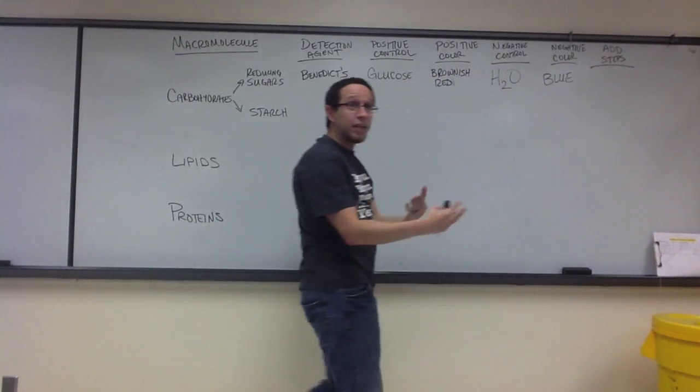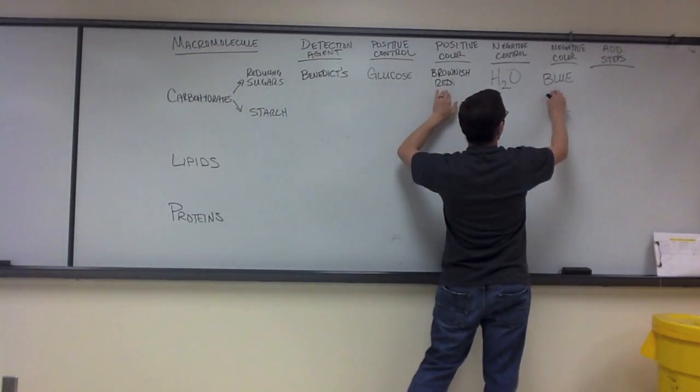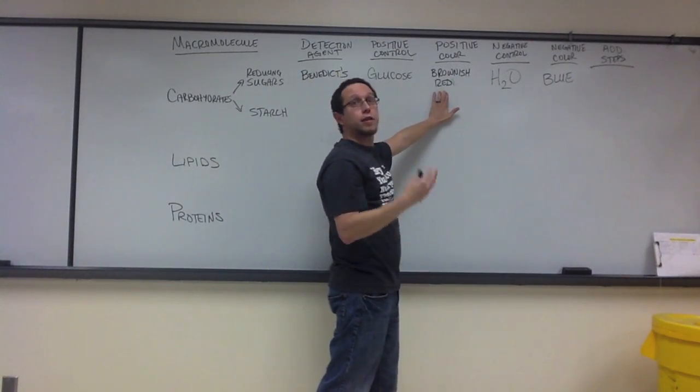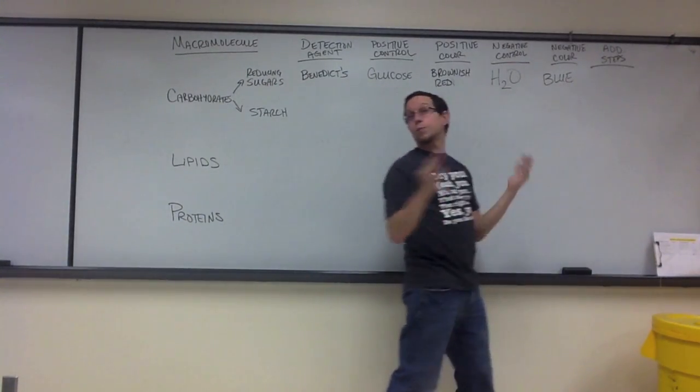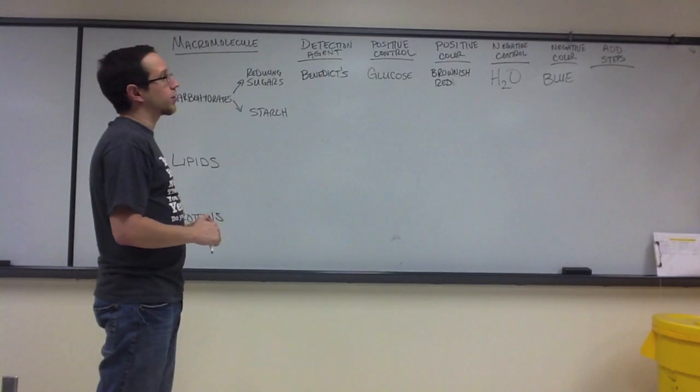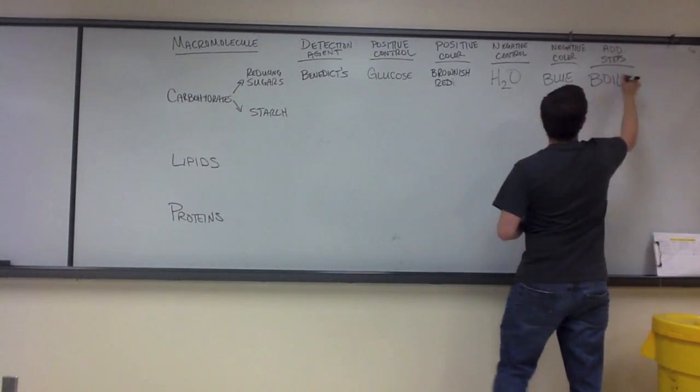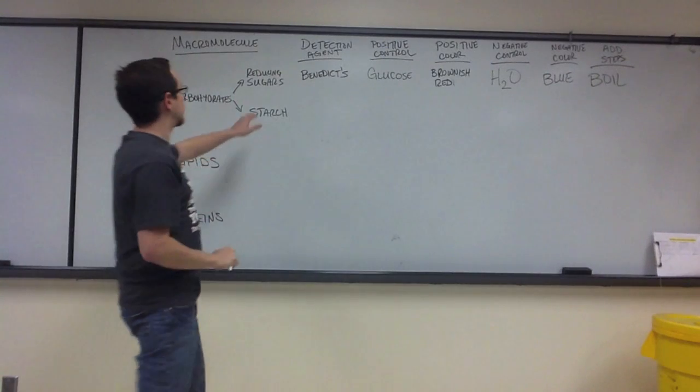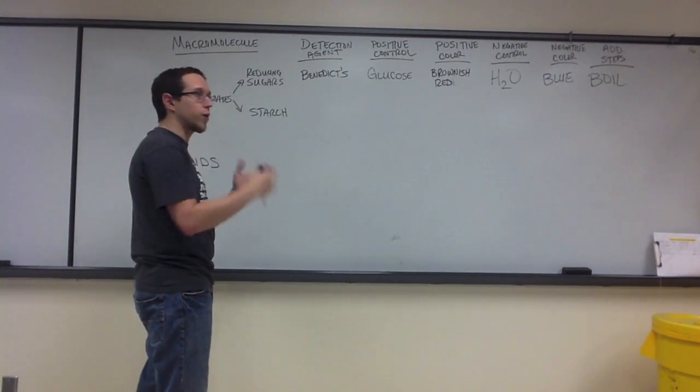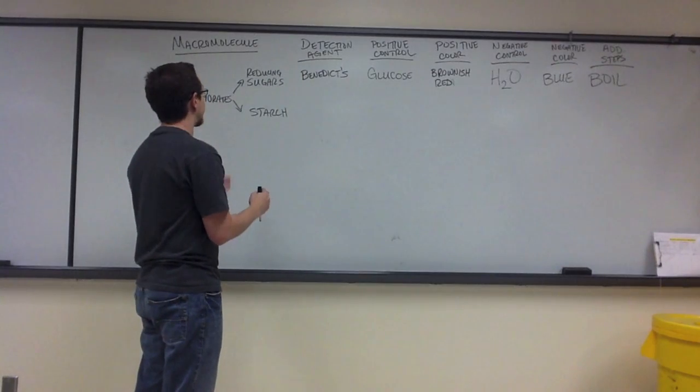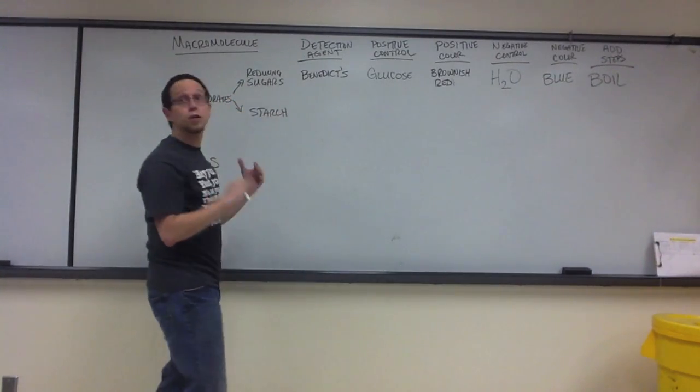So, we add Benedict's to our glucose and to our water, and it gives us these colorations. And then you could take one of your six solutions, like say the sports drink, add it with Benedict's, and see if you get one of these two results. If the sports drink showed that brownish-red color, then you have a positive result, which means that sports drink contains reducing sugars. If it stays blue, it means the sports drink doesn't contain reducing sugars. But in this particular test, there's one additional step. We actually need to heat or boil the test tube. In your reducing sugars test when we're using Benedict's, we boil the test tube so that the reaction will occur. If you don't boil your test tube, the reaction doesn't occur, and you're left sitting and staring at test tubes that all appear to have negative results in them. For this particular test, reducing sugars, you have to boil the test tube.